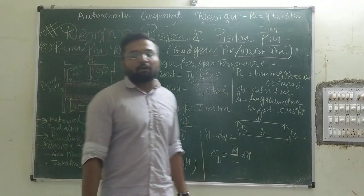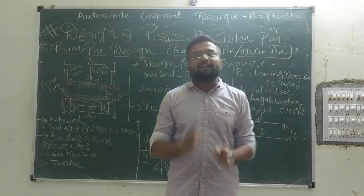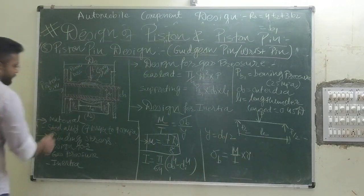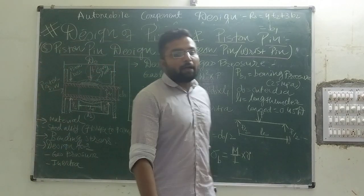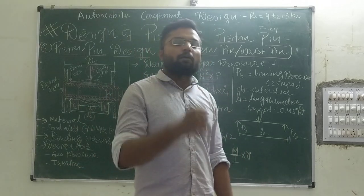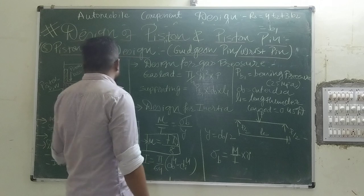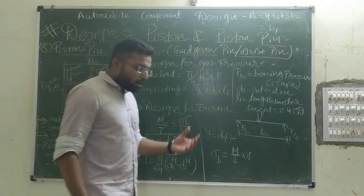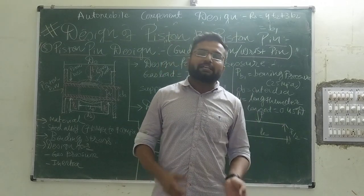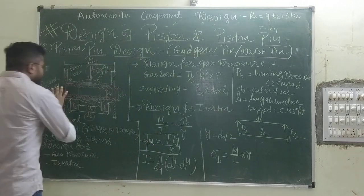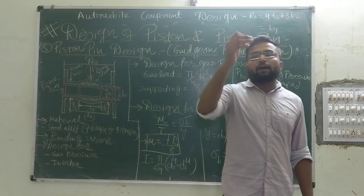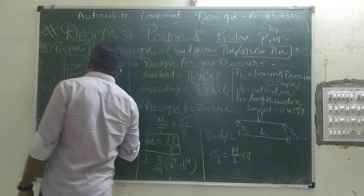Due to both bearing stress and bending stress, we must select a material that can withstand them. It should be steel alloys with a good amount of strength, since bending can easily damage a component. We can also add molybdenum and vanadium to increase strength. This pin is hollow, because it should have minimum weight to nullify inertia forces.